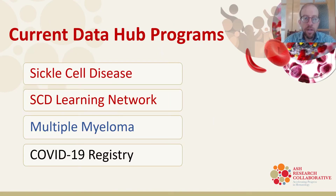As a major initiative within the ASH Research Collaborative, the Data Hub aims to create the largest shared information resource within the global hematology community. Currently the Data Hub has four programs: the Sickle Cell Disease Data Hub, the Sickle Cell Disease Learning Network, the COVID-19 Registry for Hematology, and the Multiple Myeloma Data Hub. Our intent is to build additional programs for other malignant and non-malignant hematologic diseases once our current programs have reached maturity.